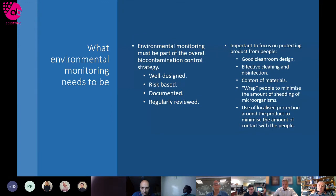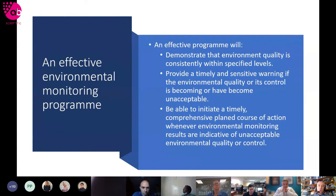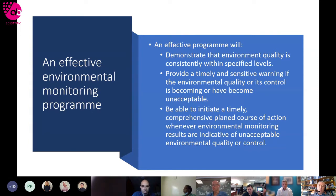Once these controls are in place, we can focus on monitoring. A good environmental monitoring program demonstrates that the quality of the environment is consistently within specified levels. The importance of the word 'consistent' comes into play with trending — you can only know whether the environment is consistent if you're looking at meaningful trends over time. We also want a timely and sensitive warning for drifts in environmental quality, and by amassing large volumes of data and regularly reviewing it, we can capture these aspects.